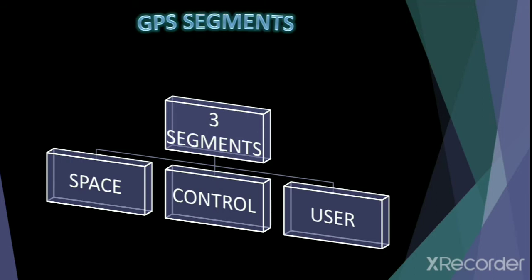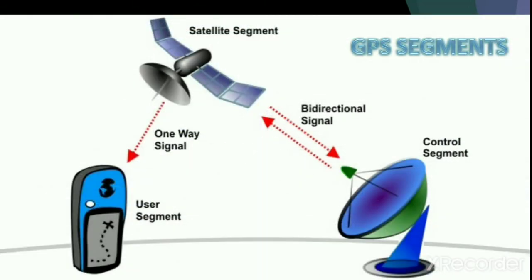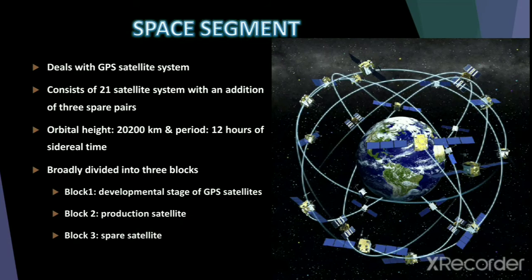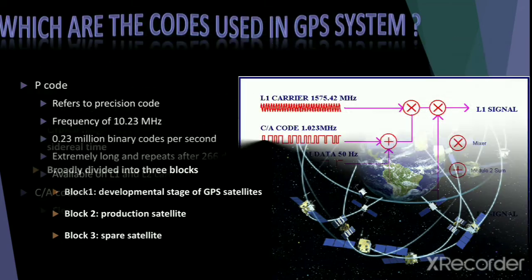Let's look into the major segments of a Global Positioning System. There are three major segments in a GPS: the space segment, the control segment, and the user segment. The space segment deals with the GPS satellite system and consists of 21 active satellites with an addition of three spare satellites. The orbital height of these satellites is about 20,200 km, and the orbital period is exactly 12 hours of sidereal time.